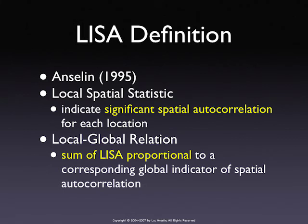Or the opposite: is this value more dissimilar from the neighboring observations than would be the case randomly? That is then negative spatial autocorrelation. So this is something that allows you to locate the clusters. Rather than pertaining to the pattern as a whole, you can locate the clusters in a particular location.